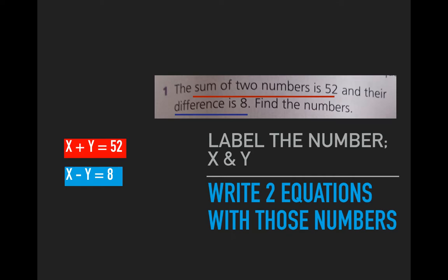Now, the second sentence there—the difference between them is 8. If you said x - y = 8 or y - x = 8, you will get the correct two numbers, but your numbers will be reversed. I'd encourage you to try that.